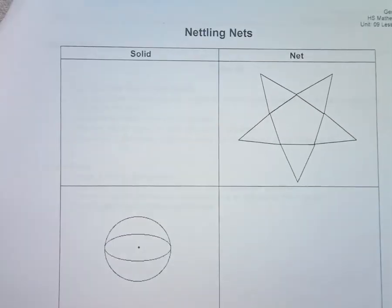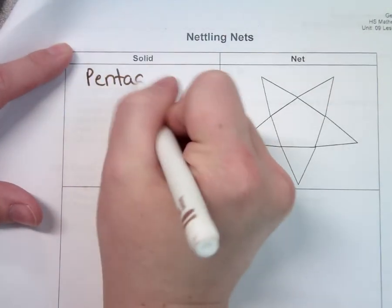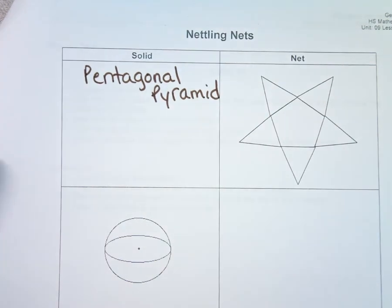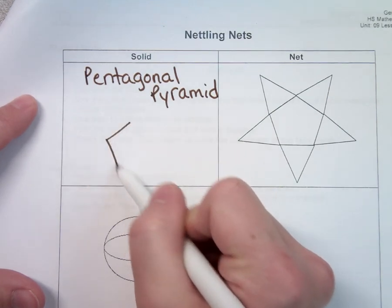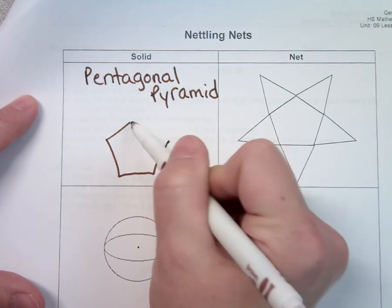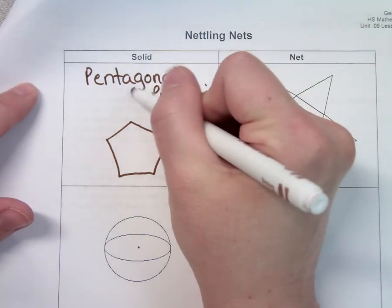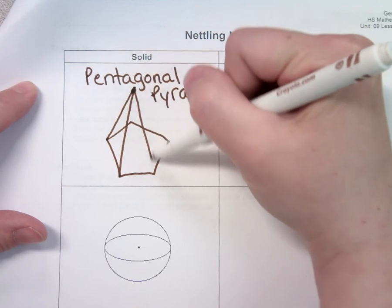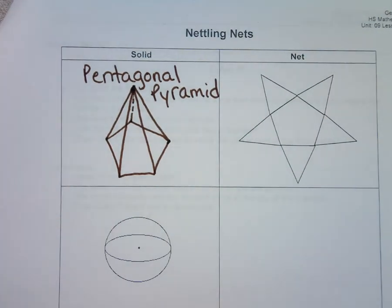The next one is a pentagonal pyramid — it's a pyramid because the sides are triangles and the base is a pentagon. The last one was a prism because its sides were rectangles; this one's a pyramid because its sides are triangles. I start by drawing the pentagon, then come up to a point and connect it to all the vertices of the pentagon, making some lines dashed for the 3D effect.